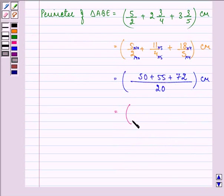Now we have their sum as 177 upon 20 centimeter, which can be written as 8 and 17 by 20 centimeter.